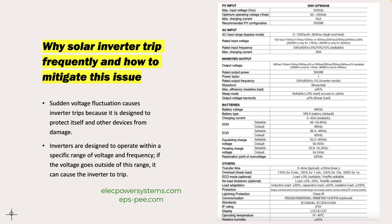Sudden fluctuations in grid voltage can cause issues for inverters and other electrical devices. When the grid voltage goes up or down suddenly, it can cause the inverter to trip because it is designed to protect itself and other devices from damage. Inverters are designed to operate within a specific range of voltage and frequency, and if the voltage goes outside of this range, it can cause the inverter to trip by shutting off when the voltage is too high or too low.